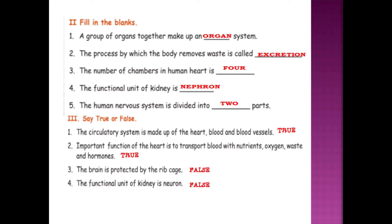Fill in the blanks. A group of organs together make up an organ system. The process by which the body removes waste is called excretion. The number of chambers in the human heart is 4. The functional unit of kidney is nephron. The human nervous system is divided into two parts. The circulatory system is made up of heart, blood and blood vessels.